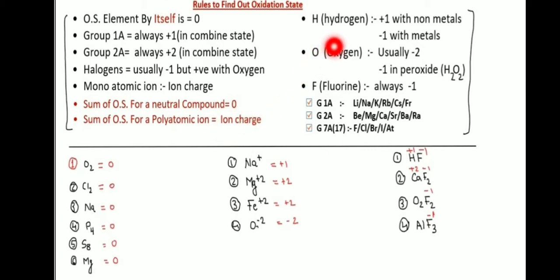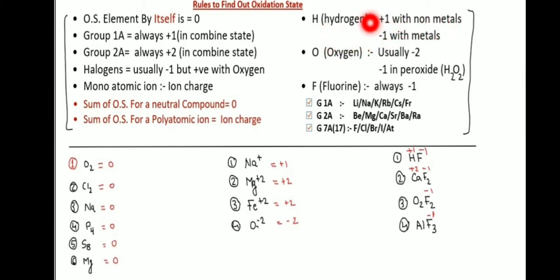Hydrogen oxidation state: plus one when combined with non-metals, minus one when combined with metals — that is metallic hydrogen.